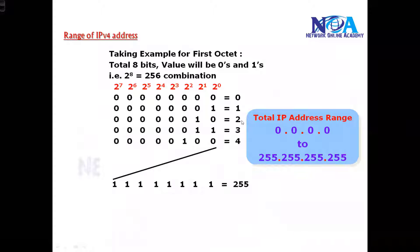The next thing we need to know is the range of IP addresses. The IP address has four portions, and each portion has eight bits, not more than that. There will be a group of eight bits in each portion. Total IP address will be a 32-bit address.